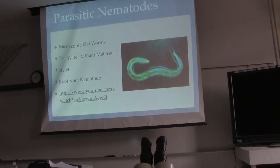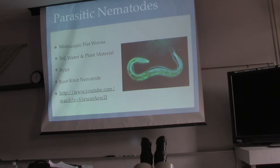Nematodes are microscopic flatworms that live in soil, water, and on plant material. They have a stylet — essentially a needle in their mouth — which they use to stick into a plant and suck out juices. Root knot nematode is one of the biggest problems.